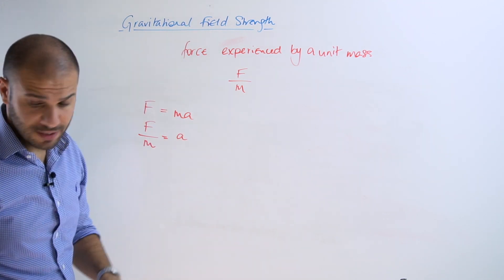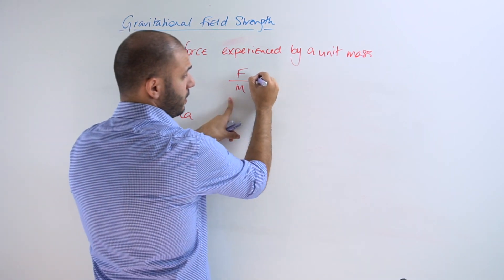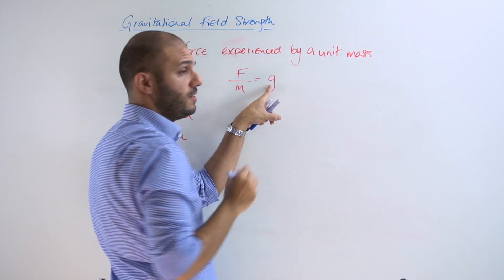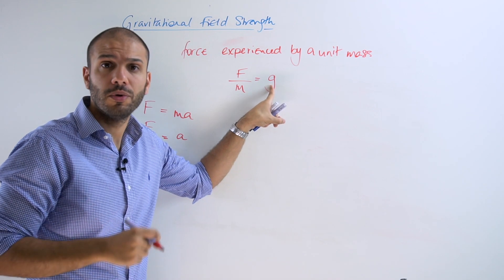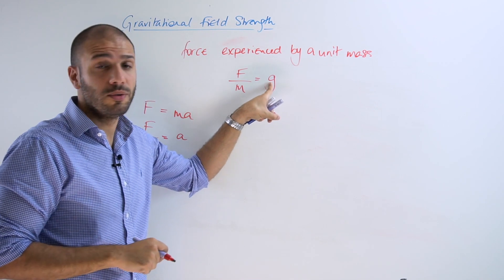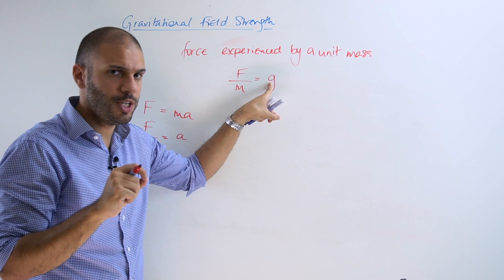In fact the gravitational field strength is a very particular type of acceleration due to gravity and therefore we denote that by a small g.